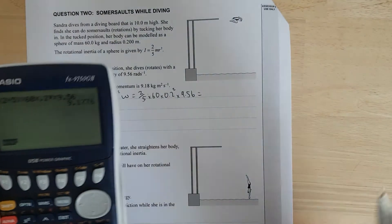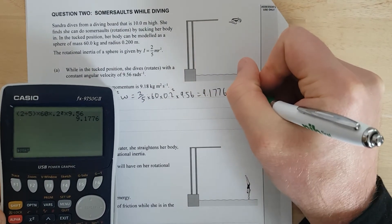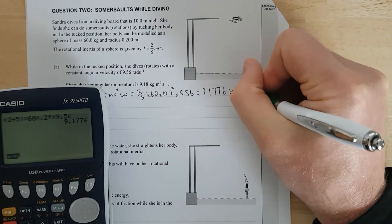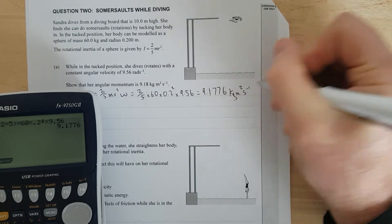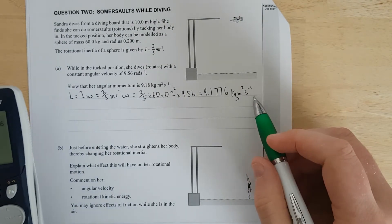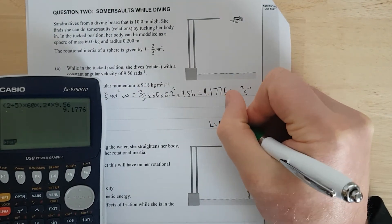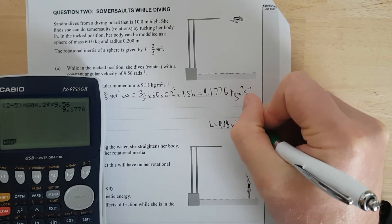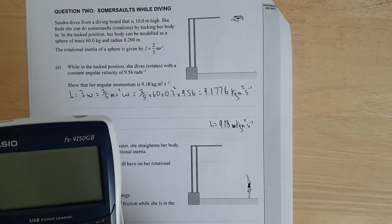And that is going to be equal to, as you can see, 9.1776. We've got kg mass, metres squared because it's radius, to the negative 1 because that's radians per second. And now I need to round this up. So L is equal to, and it's literally given to you right there, 9.18 kg metres squared second negative 1. Sweet.